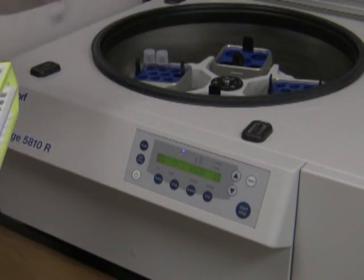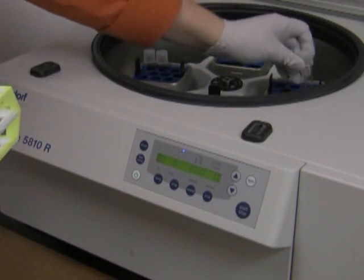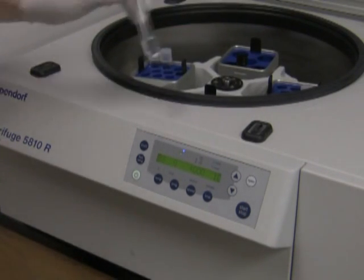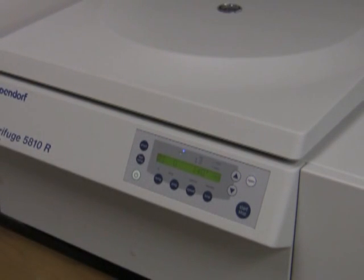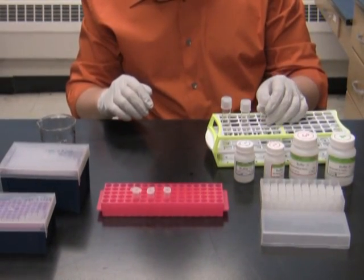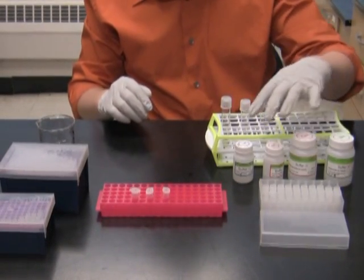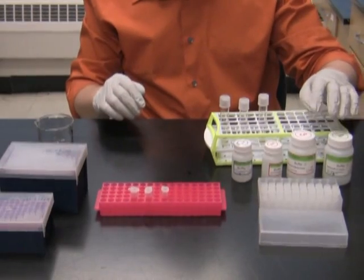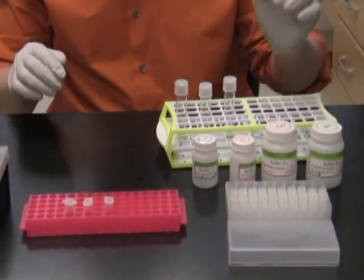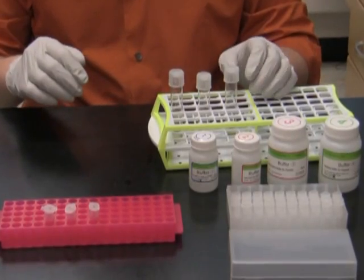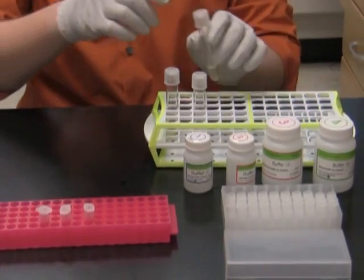Here I have pelleted cultures and right now I'm going to use a standard mini prep kit, which in this case is a Pionier kit, which consists of several buffers and columns to isolate the plasmids. I start by discarding the supernatant from each of the tubes.